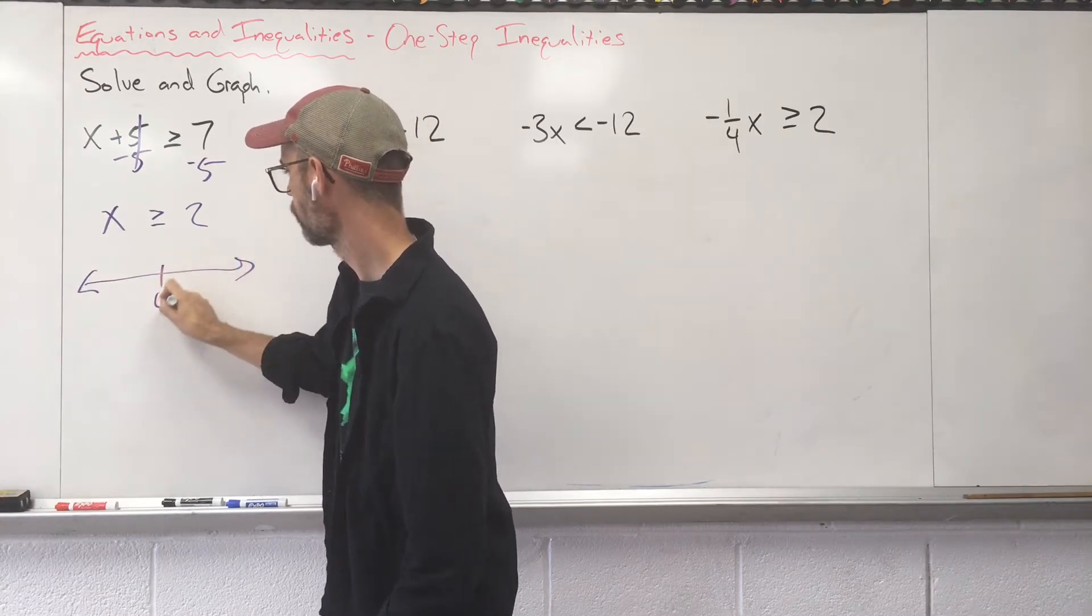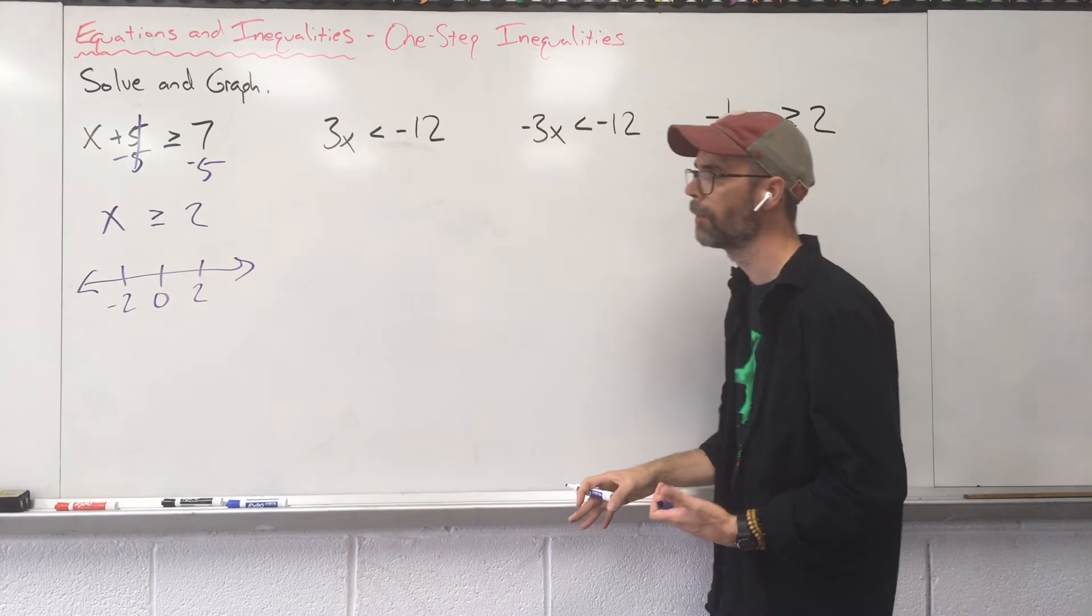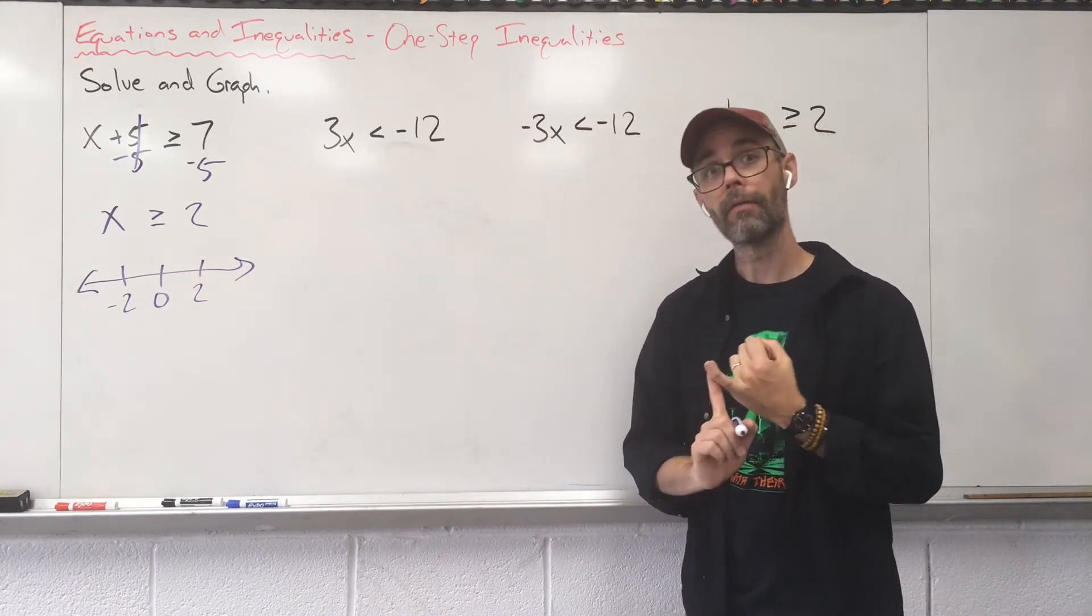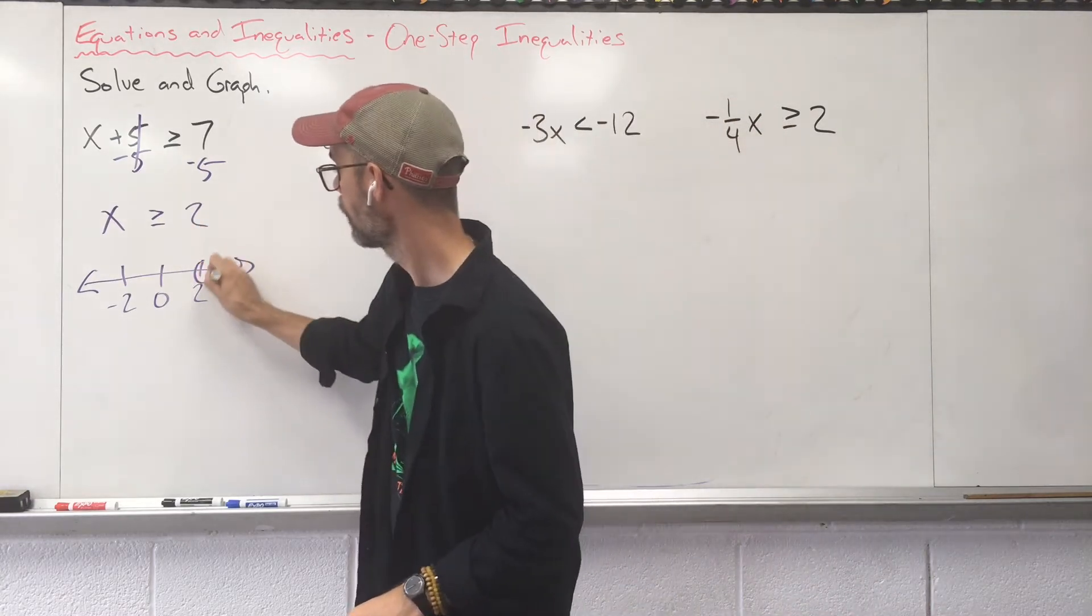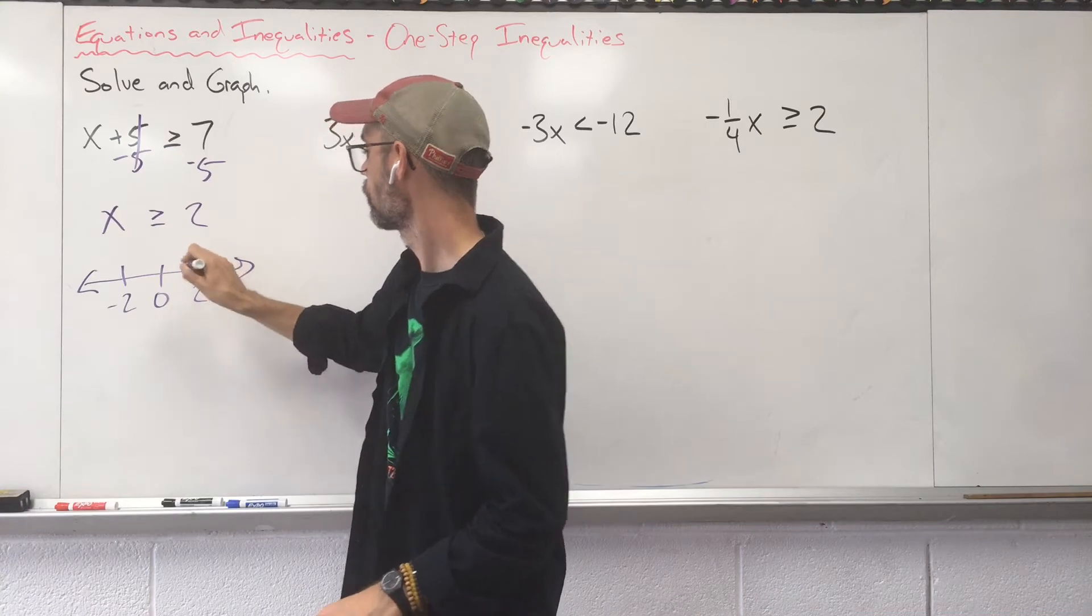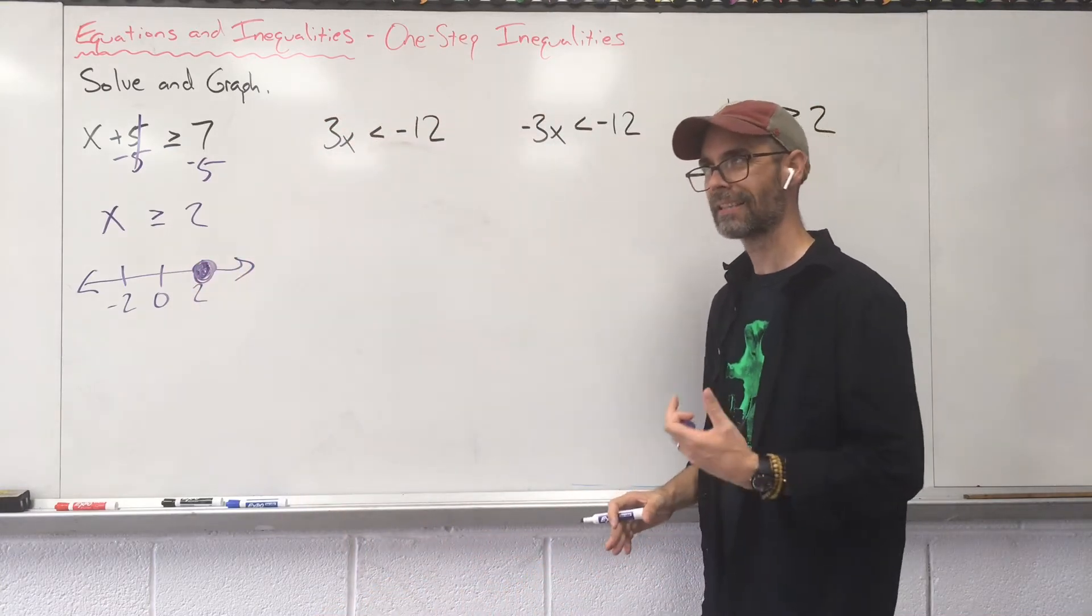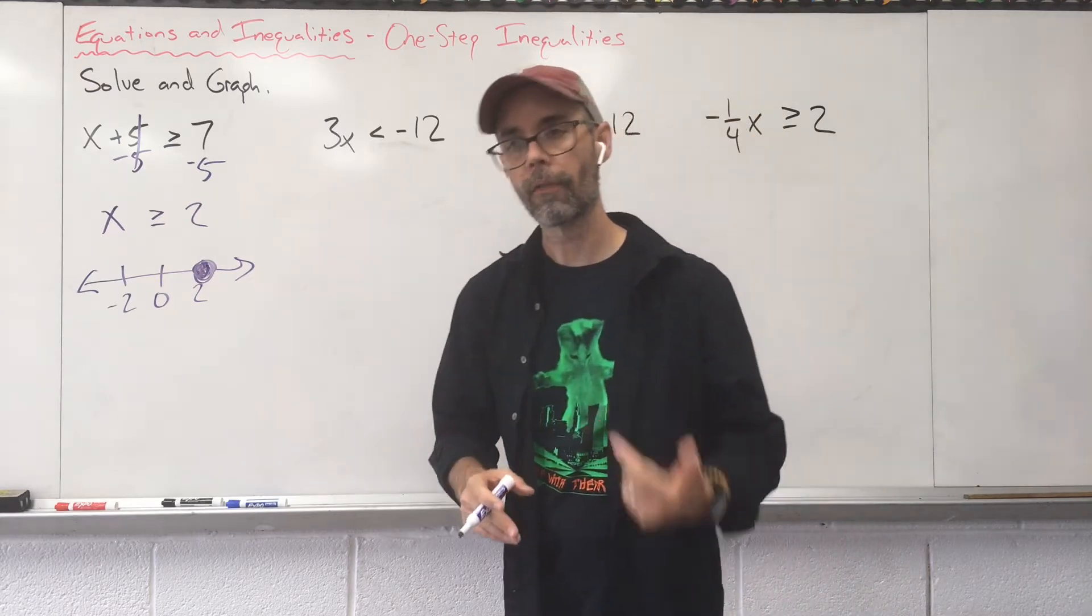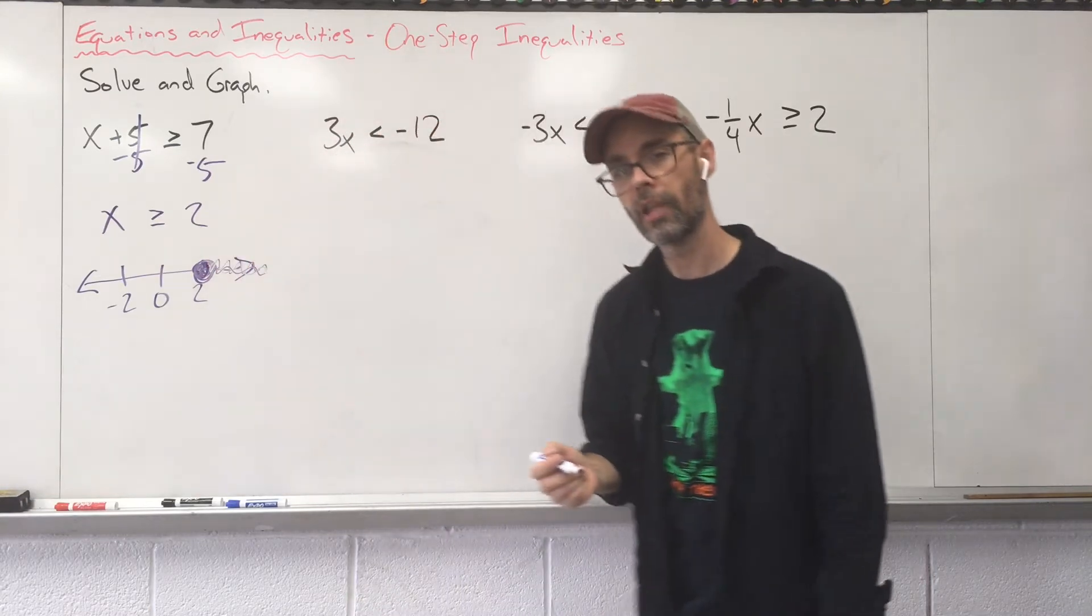I never make my graphs too detailed as long as those pertinent numbers are on there, that's fine. Do we have an open circle or a closed circle? Do we have an equal sign? Yes, we do. Because we have an equal sign, that means closed circle. X is larger than 2, X is greater. What are the numbers bigger than 2? Three, four, five? All those numbers are off to the right. Everything to the right gets shaded in.